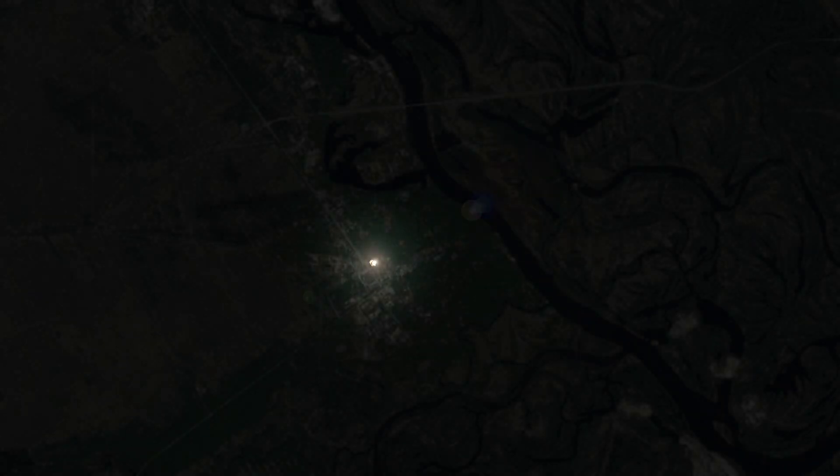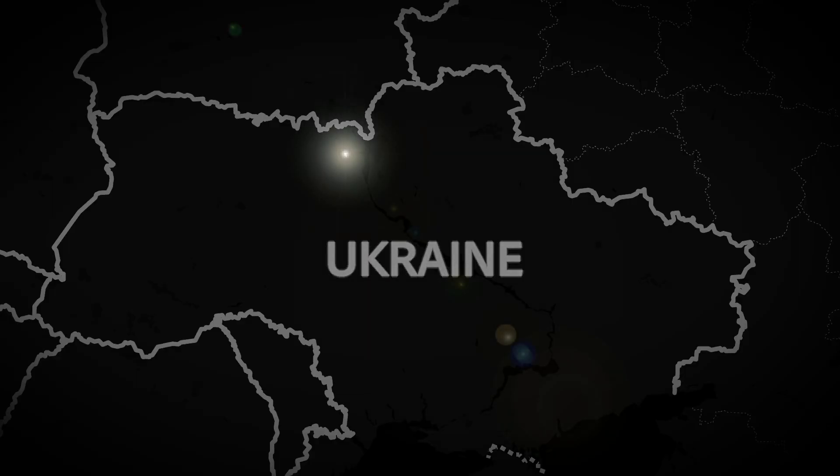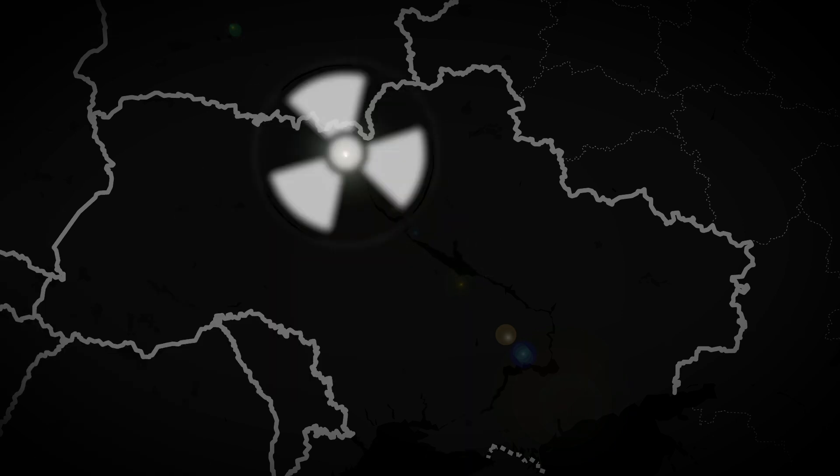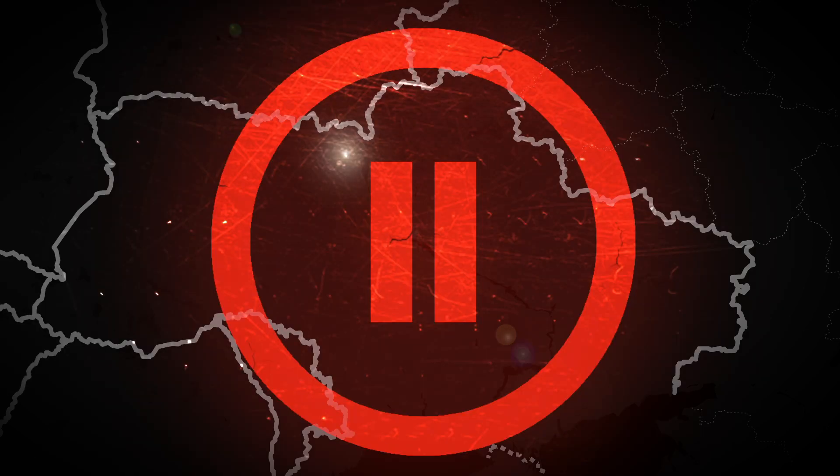At 1:23 in the morning, an explosion rips through the quiet night in Ukraine, 50 miles north of the capital, Kyiv. Chernobyl Reactor 4 has detonated, releasing 400 times the radiation as the nuclear bomb dropped on Hiroshima. But how did this happen?